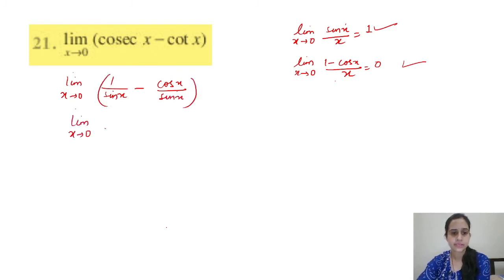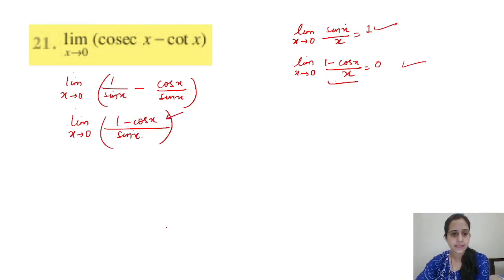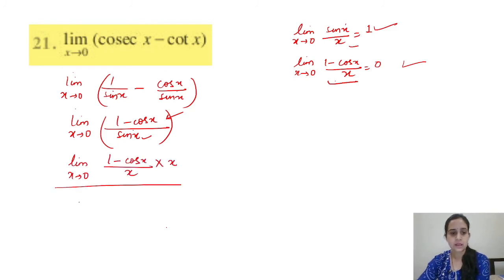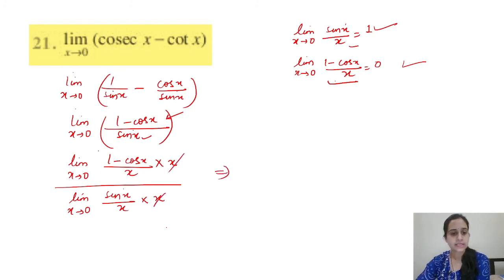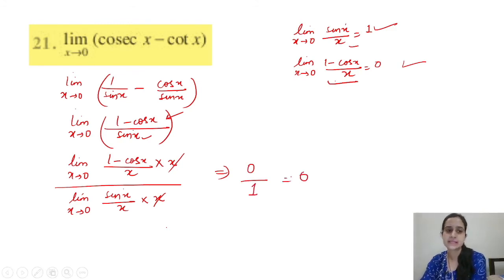Question 21 (implied): limit x tends to 0, (1 − cos x)/sin x. After manipulation, multiply numerator and denominator by x. This gives [(1 − cos x)/x] × [x/sin x]. As x → 0, x/sin x → 1 and (1 − cos x)/x → 0. So the numerator gives 0 and denominator gives 1. Answer is 0.